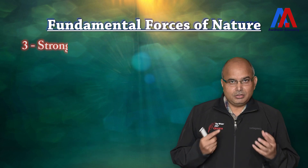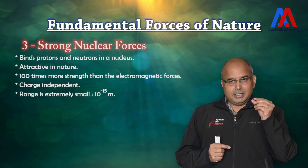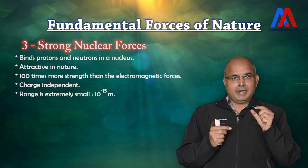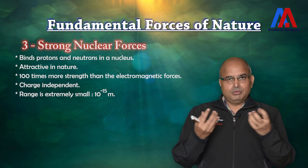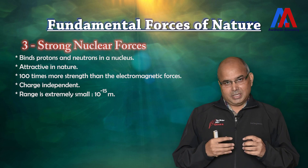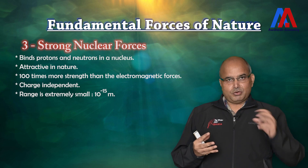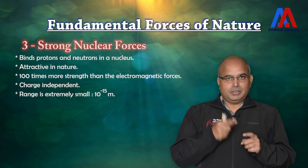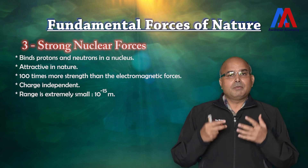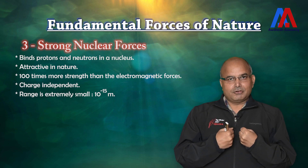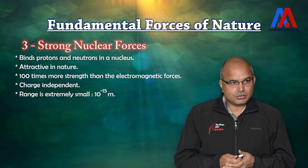The third type of force is called strong nuclear force. The nucleus has a diameter of almost 10⁻¹⁵ meters and contains positively charged protons and neutral neutrons. Logically, the positive charges should repel each other and the nucleus could not hold together. But the strong nuclear force is attractive regardless of charge — whether proton or neutron — and operates only within the range of 10⁻¹⁵ meters. It is almost 100 times more powerful than the electromagnetic force, allowing it to overcome electromagnetic repulsion and keep the nucleus together.